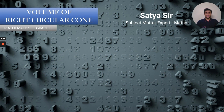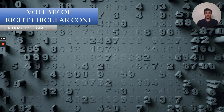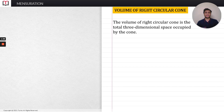Hi everyone, today in this video I am going to discuss the volume of a right circular cone. The volume of a right circular cone is the total three-dimensional space occupied by the cone.